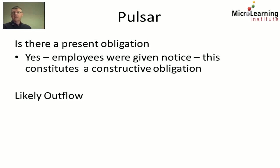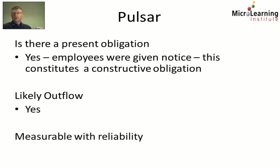Next the question is, is there a likely outflow of resources? And again we see in the body of the question that we're going to be paying redundancy and so on. So there is a likely outflow. And thirdly we need to consider, can we measure this outflow with some reliability? Again we're given some details about the redundancy arrangements and so on. So yes, even though we can't measure the outflow with absolute accuracy, we can measure it with reliability. So consequently the fact that we can answer yes to each of these three questions under IAS 37 allows us to recognise a provision.